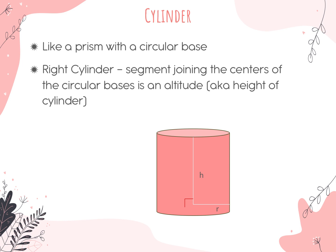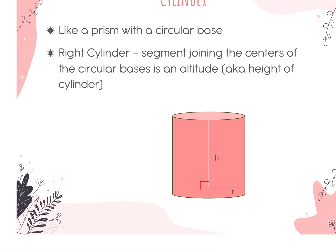Now we're going to identify the definition of a cylinder. A cylinder is just like a prism — the only difference is that instead of a polygon base, it has a circle base. The right cylinder has a segment that joins the centers of the circular bases, which is also known as the altitude or height of the cylinder. For cylinders, we need to calculate the area of the base shape, which is a circle — that's why they give us a radius — and then we multiply it by the height.